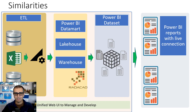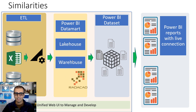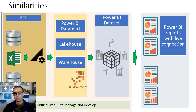Now these three are quite similar in some ways. They all provide a storage engine where you store data, and there is usually an ETL process — dataflow, pipeline, or SQL commands — that loads data into it. The physical storage may be One Lake or another backend, but these are the logical objects in Fabric. Each has a Power BI dataset associated with it, live reports connected, and a web UI modeling environment.